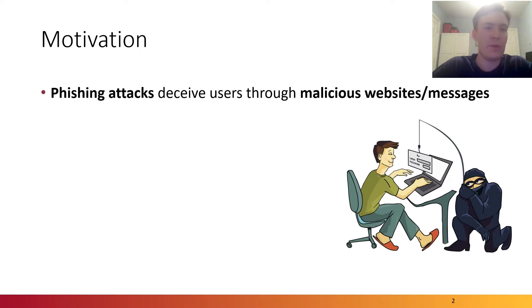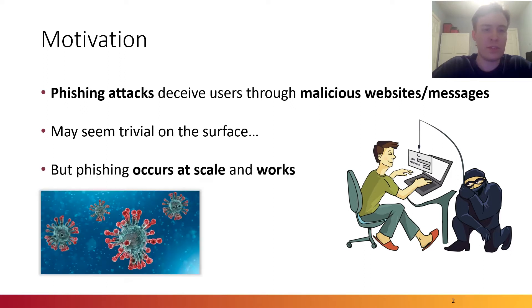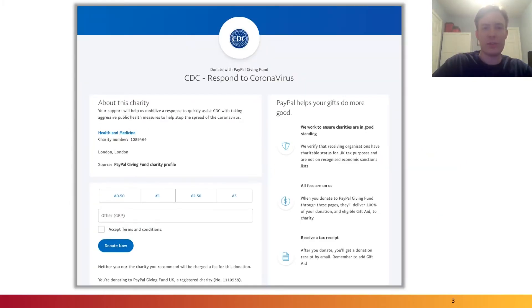As you may know, phishing attacks use social engineering to trick users through malicious websites or messages. Although these may seem trivial on the surface, they occur at scale and cause real world damage. For example, earlier this year we saw a surge in phishing related to the coronavirus pandemic. Here's an example of a phishing website which impersonates a CDC donation campaign. Victims who visit this website might think they're making a donation when in fact they submit not only their financial information, but also their identities to fraudsters.